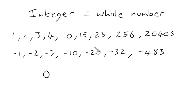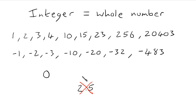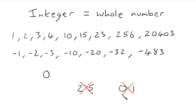So integers are whole numbers. Numbers that aren't integers will be anything that isn't a whole number. So for example, 2.5 — that's not an integer because it's not a whole number; it's a decimal. And likewise, 0.1 is not an integer because, like 2.5, it's a decimal.